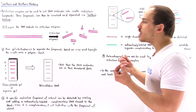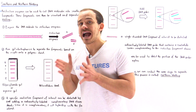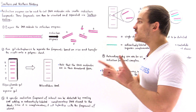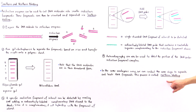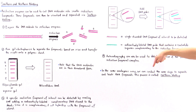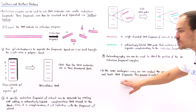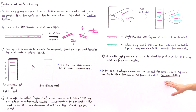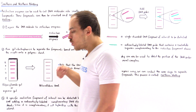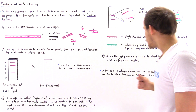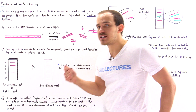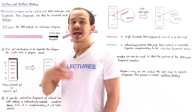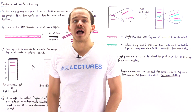We can also repeat the same process with RNA molecules. If we have an RNA molecule we want to isolate, we use a radioactively labeled RNA probe in the same process — but when dealing with RNA, the process is known as northern blotting. In summary: southern blotting detects and separates DNA fragments, northern blotting detects and separates RNA fragments, and western blotting detects and isolates protein fragments, as discussed in the lecture on purifying proteins.